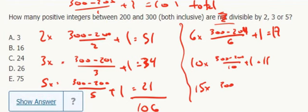300 minus 210. 201 is a multiple of 3, but not 5. 204, 207, 210 over 15. That gives me 35.